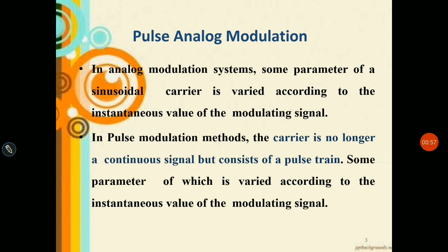Pulse analog modulation: in an analog modulation system, some parameters of a sinusoidal carrier are varied according to the instantaneous value of the modulating signal. In pulse modulation methods, the carrier is no longer a continuous signal; rather it will be a series of pulses — that means a pulse train — some parameter of which is varied according to the instantaneous value of the modulating signal.